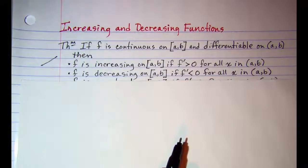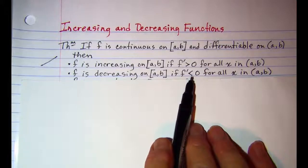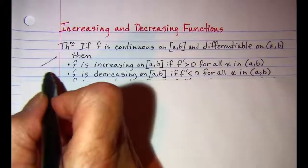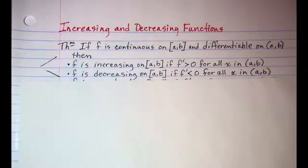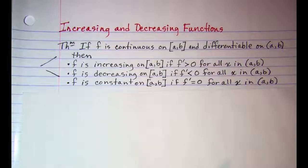f is decreasing if the first derivative is negative. Again, our tangent line is going to have a negative slope so our function is going downhill or decreasing. And f is constant if our derivative is equal to 0.